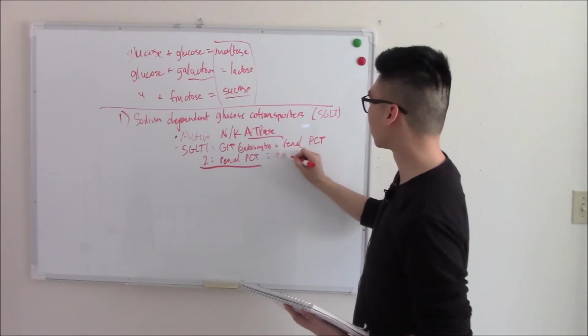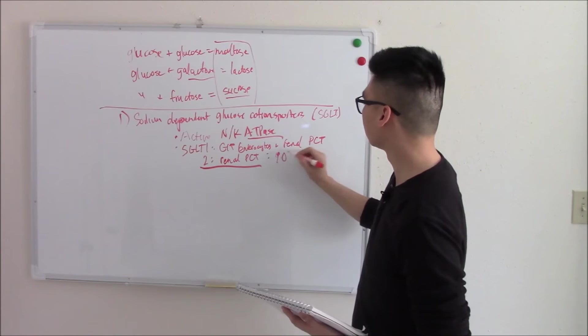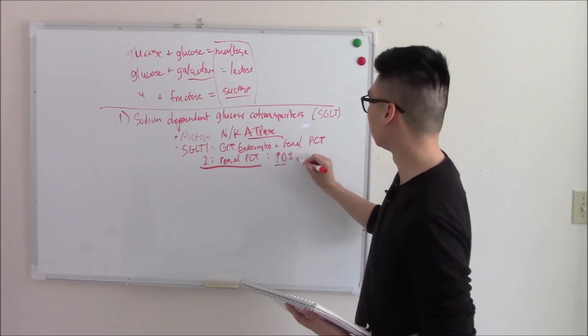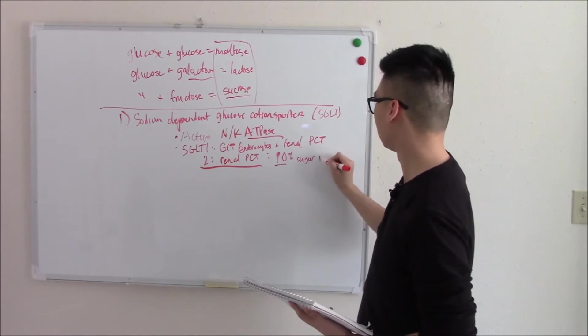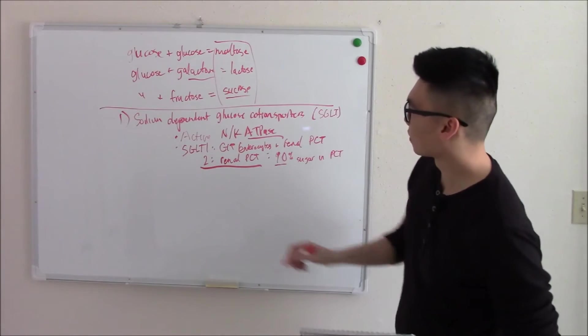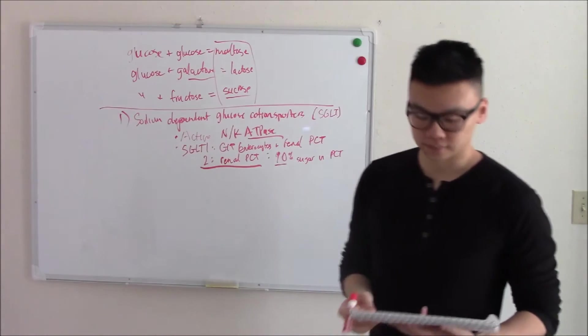So about 90% of the sugar that gets reabsorbed is due to SGLT2. So that's your first group. That's your main group.